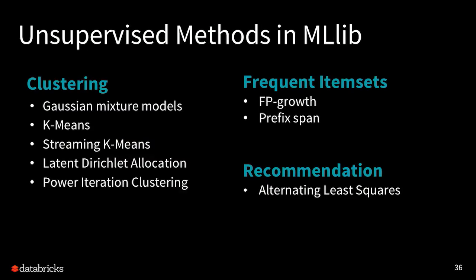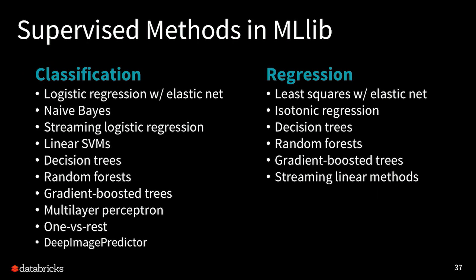Here is the actual listing of methods in MLlib. We also support other libraries such as open source R as well as other Python libraries. These are distributed libraries built into Spark — things like Gaussian mixture models, k-means, LDA, PIC, as well as ALS for doing recommendations. Those are the most popular algorithms, along with supervised methods like logistic regression, naive Bayes, linear SVMs, decision trees, random forests, and gradient boosted decision trees.